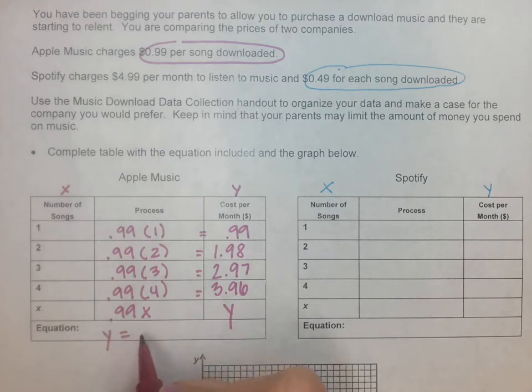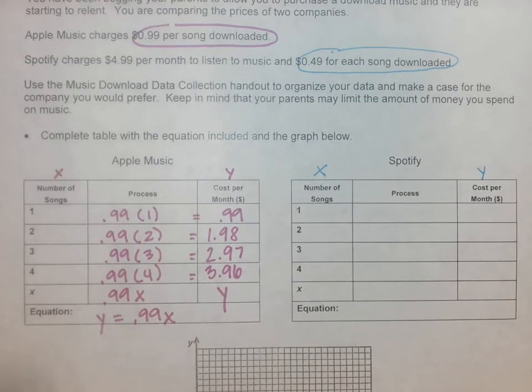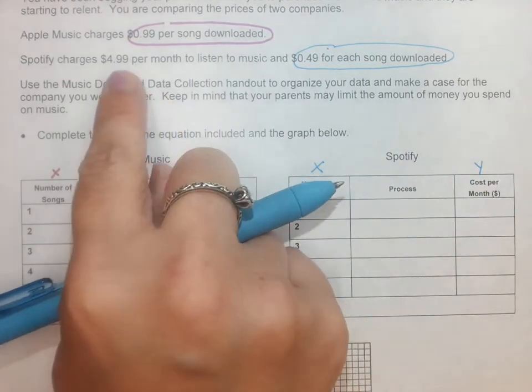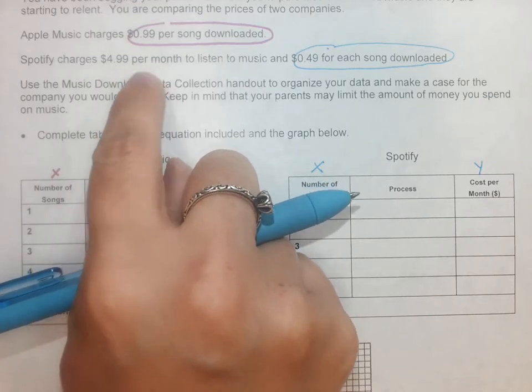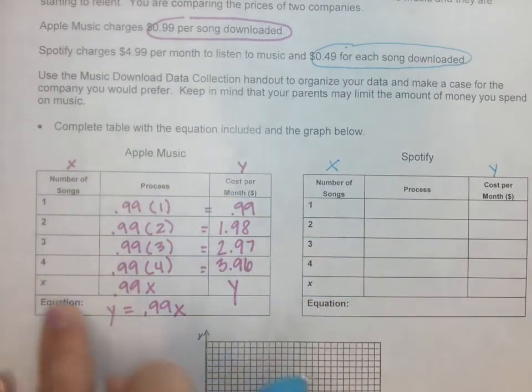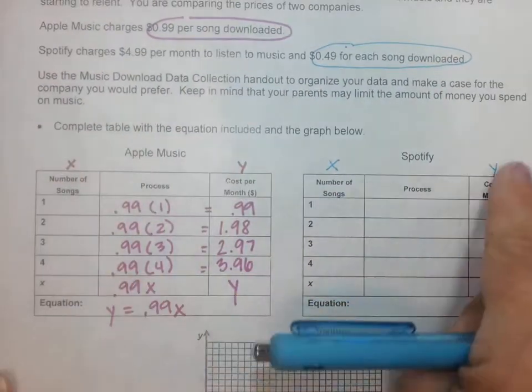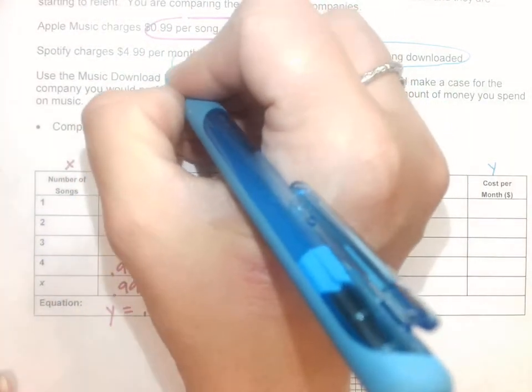Got my y values in there, and so my equation would be y equals 0.99x. Let's go over to Spotify. It looks like there's a monthly fee. Now don't focus too much on the per month - this is for the month, this is the one-time fee. Let's write 'fee' by that.